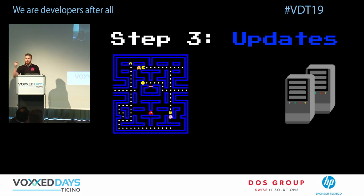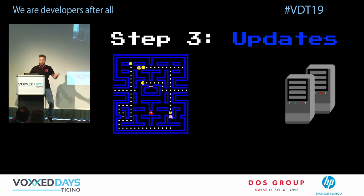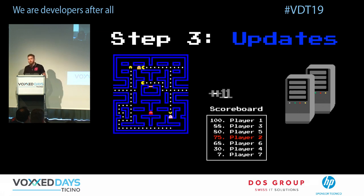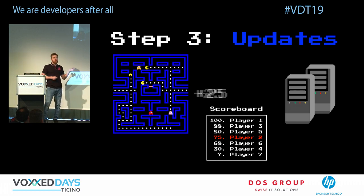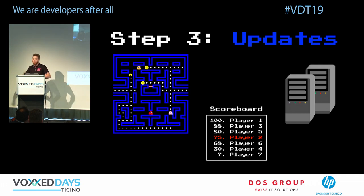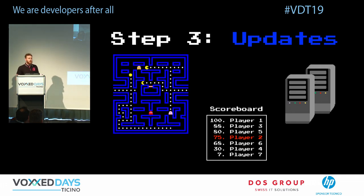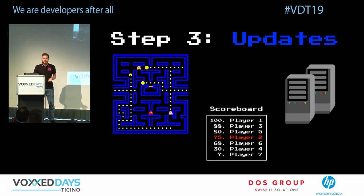To make the game competitive and fun, we'll introduce a scoreboard: every Pacman has to eat food on the map, and every ghost should catch a Pacman to earn score. But the question is — where are the microservices? This is just browser-server communication.